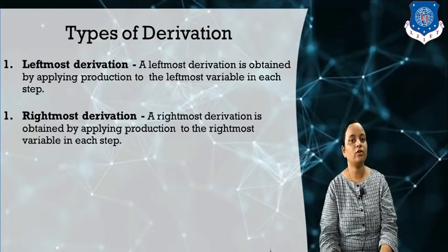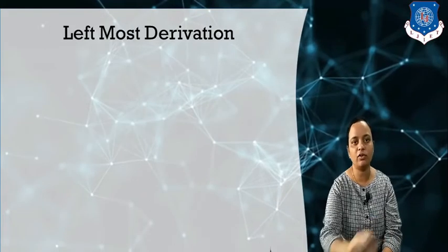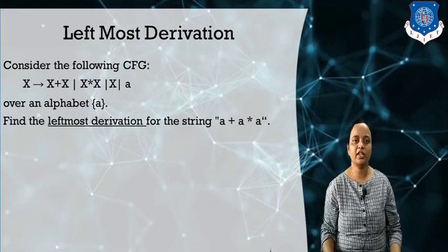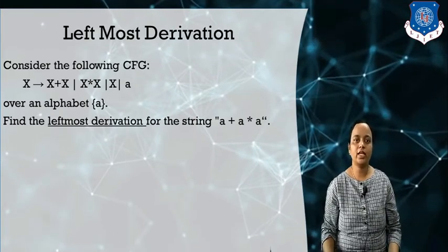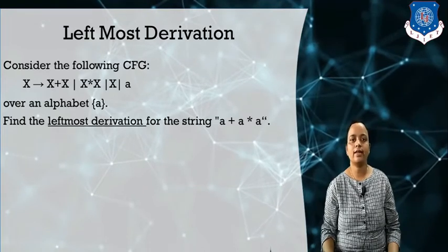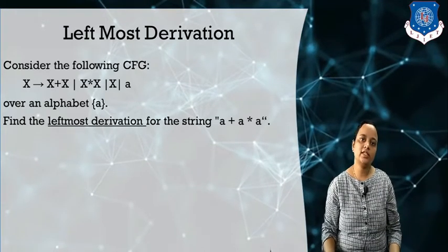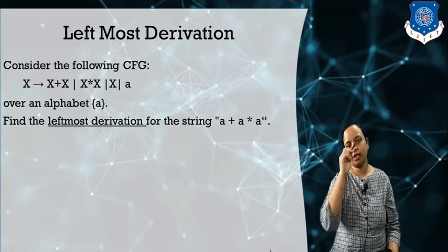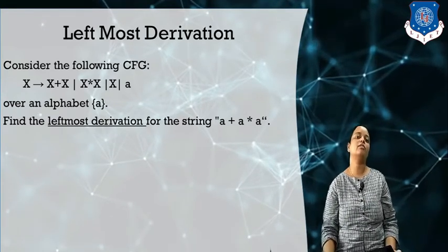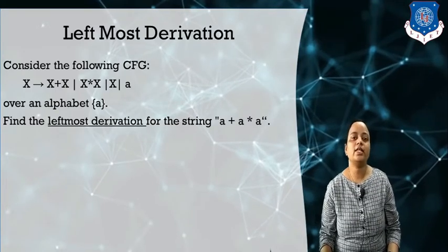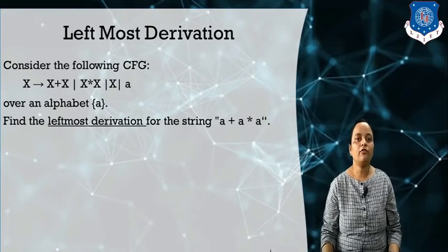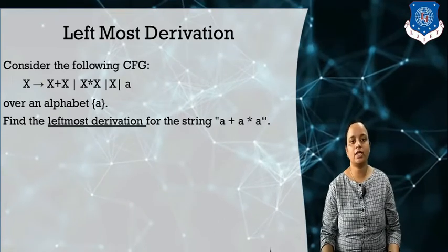Let us understand this concept by using an example so you can get a clear idea. First we take the leftmost derivation. Here the example is given with a context-free grammar where the production is: X derives X plus X | X star X | X | a. We want to derive the leftmost derivation for the given string a plus a star a.